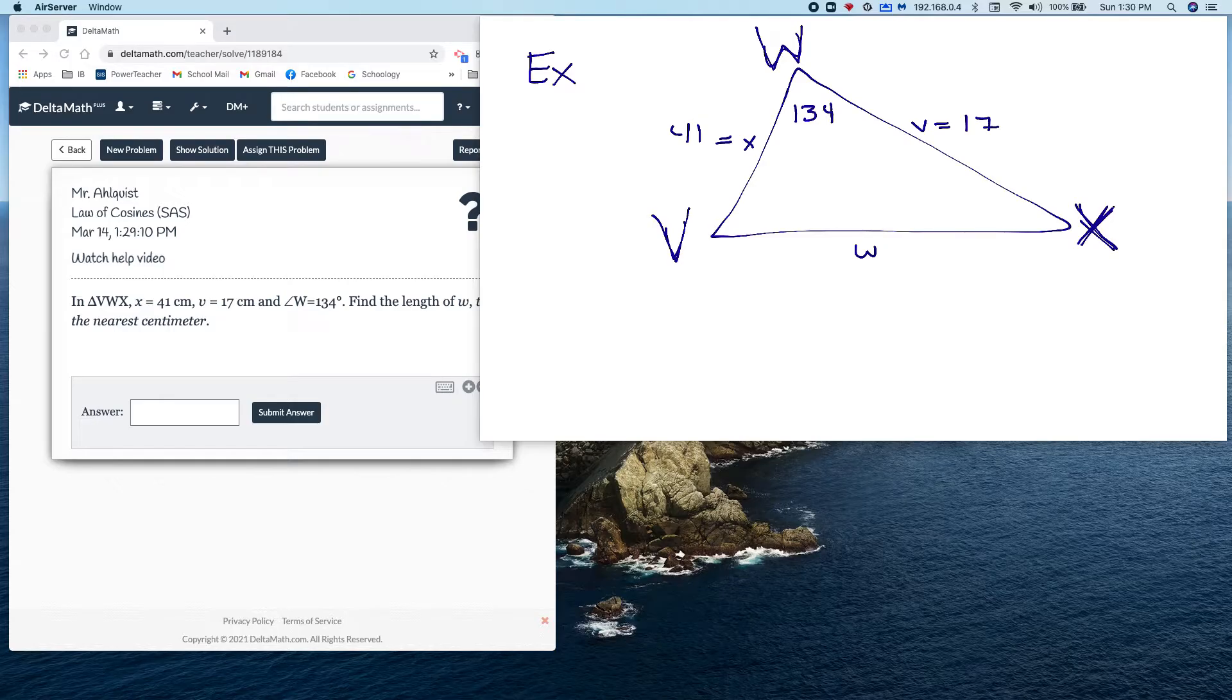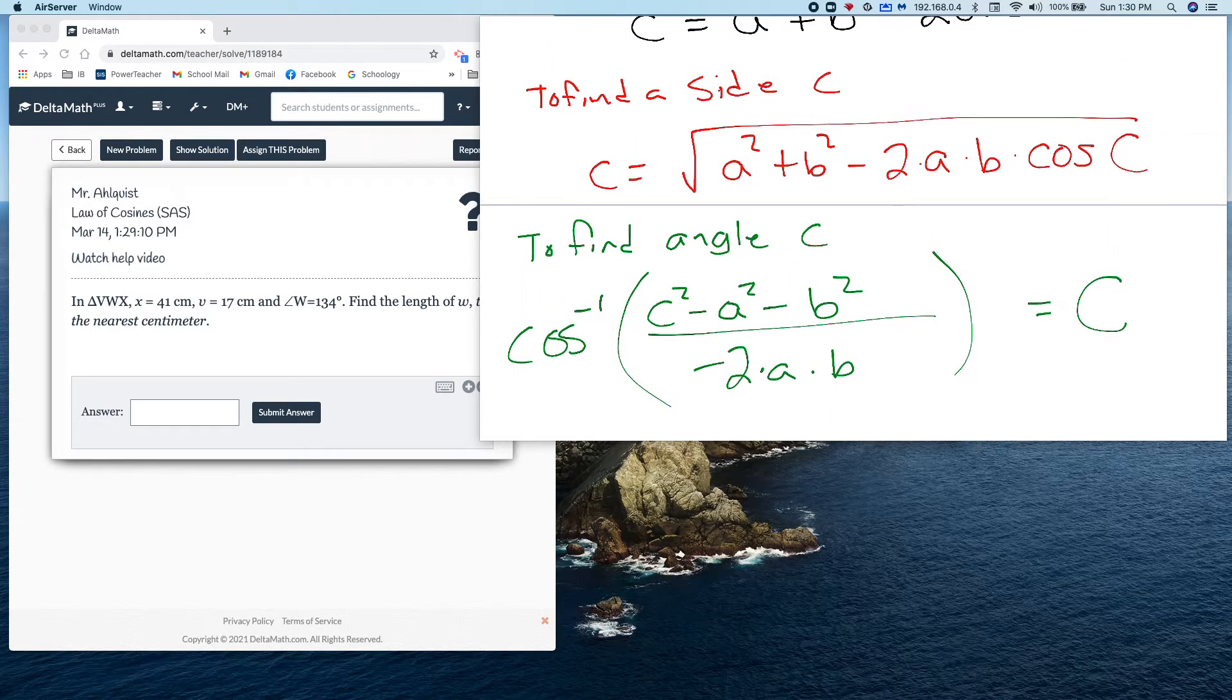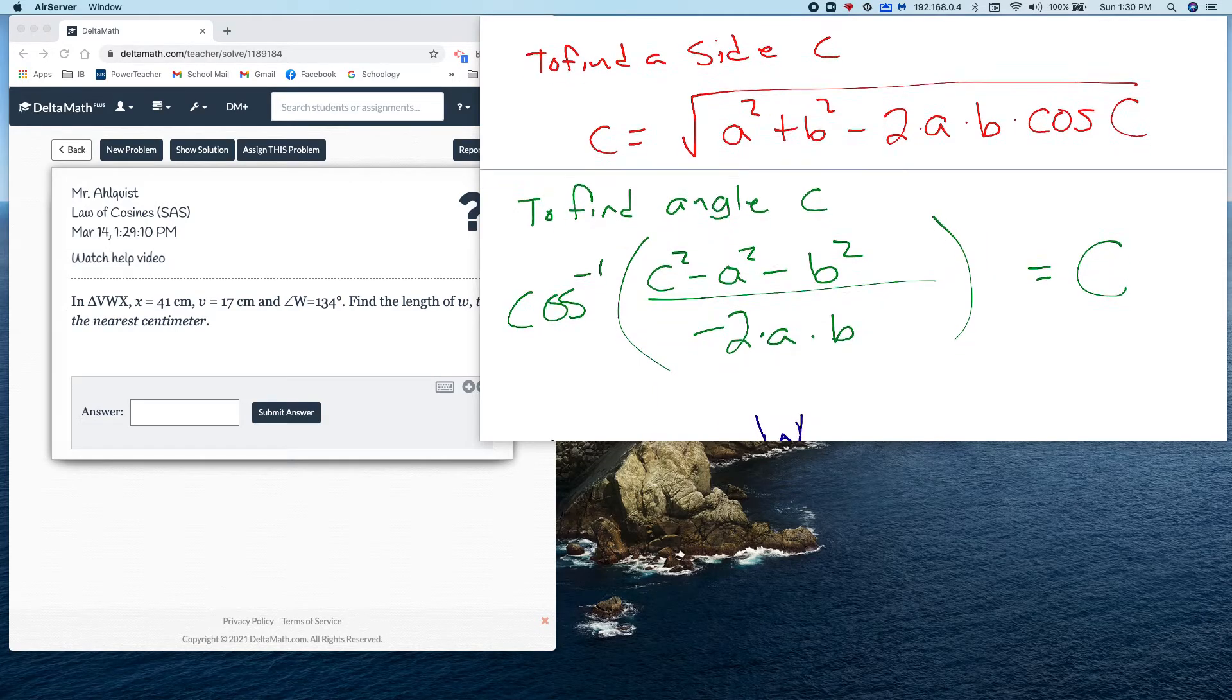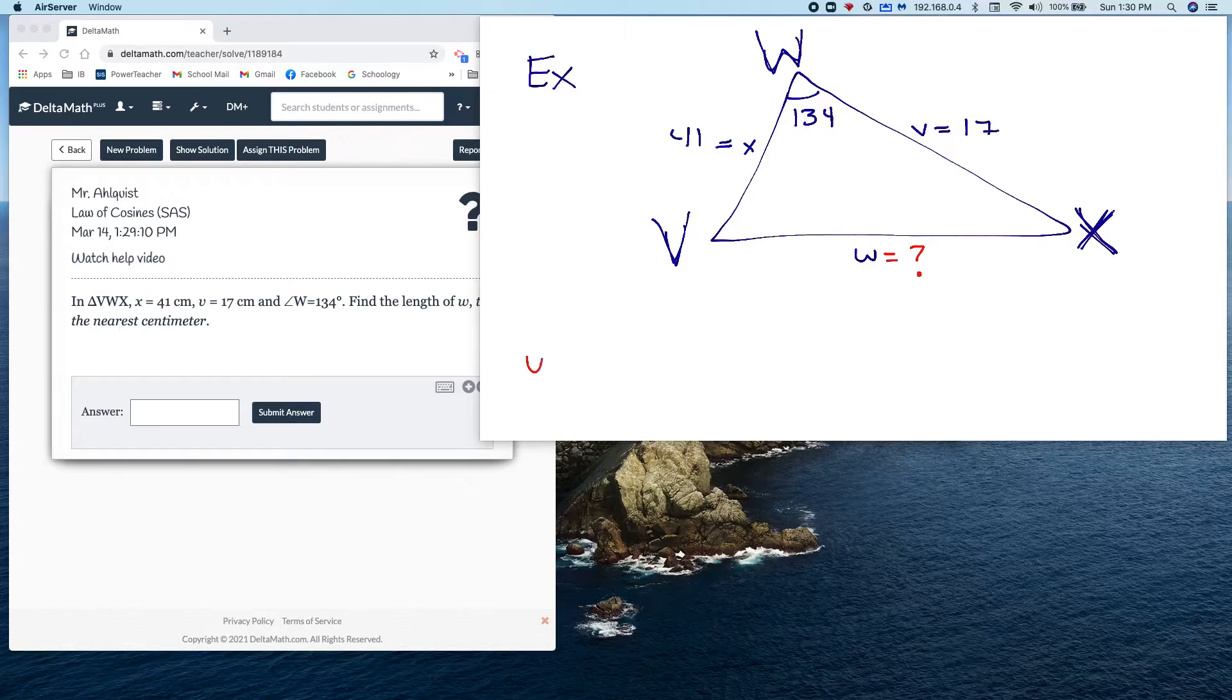So it says side x is 41, it says side v is 17, and it says w is equal to 134. If you try to set up the law of sines on this, it won't work. You won't have enough information. You can't find another angle and you really need another angle. Because remember, we're trying to find this side. That's what the question asked. And we can't do anything other than use the law of cosines. But what we can do is we can use the law of cosines with this idea of finding a side. Instead of finding side c, we're going to find side w. So here's what I have: w is equal to the square root of 41 squared plus 17 squared minus 2 times 41 times 17 times the cosine of 134.